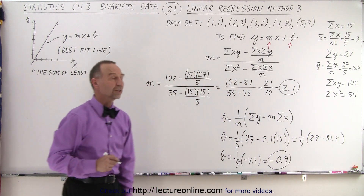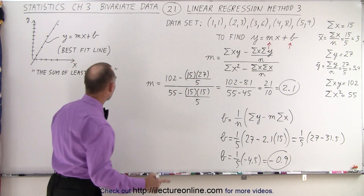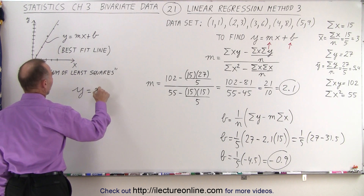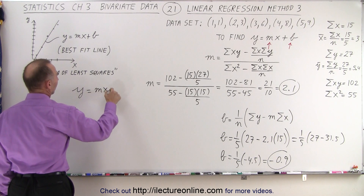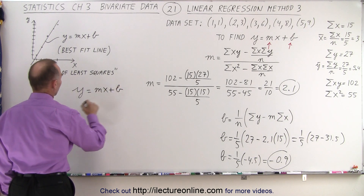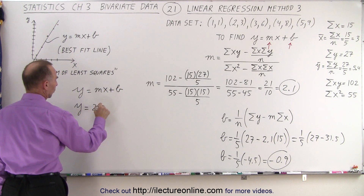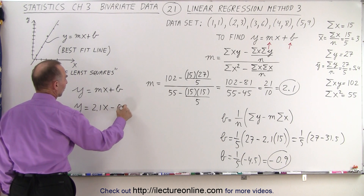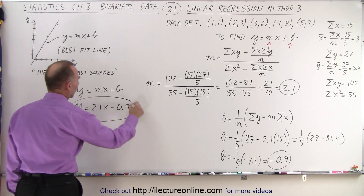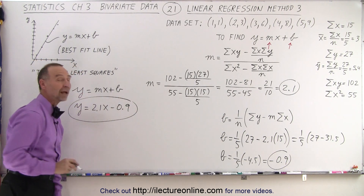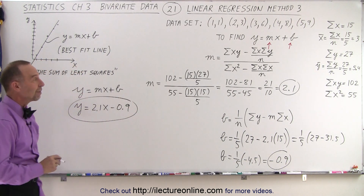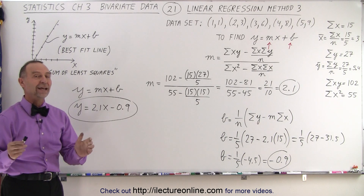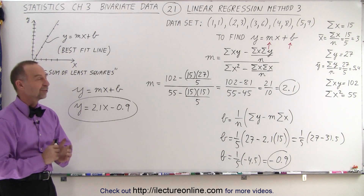And that also looks familiar. So we can plug that into our equation y equals mx plus b, giving us y equals 2.1x minus 0.9. You can see that this might still be the best method and the quickest method of all. And that is how it's done.